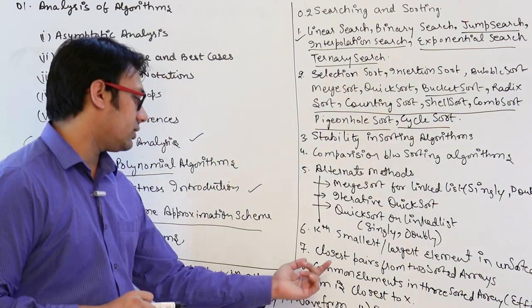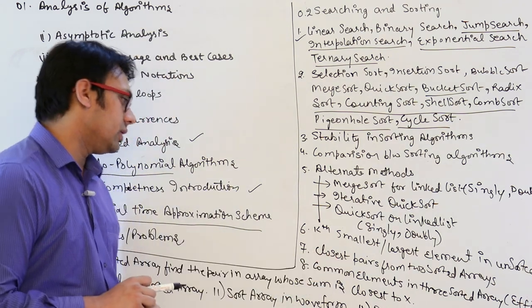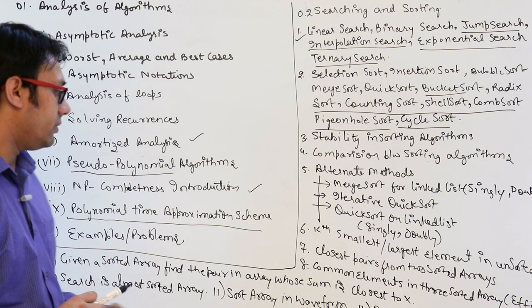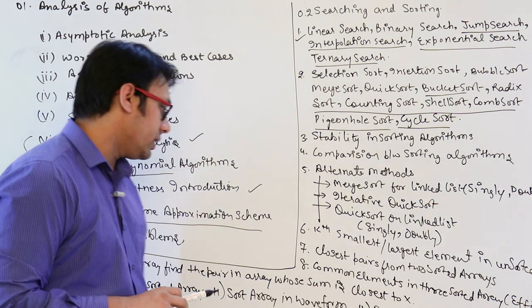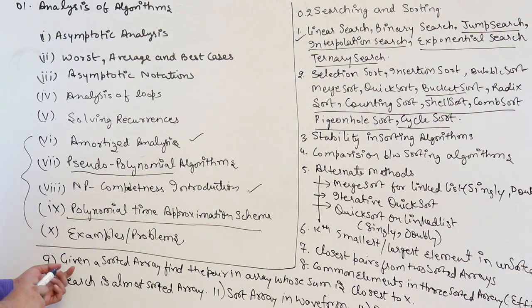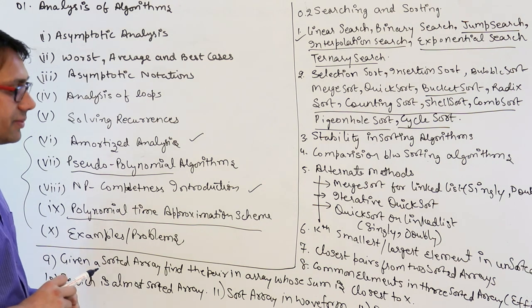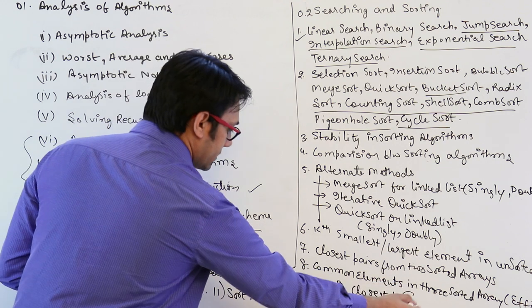Then we have the closest pair from two sorted arrays, common elements in three sorted arrays which should be efficient, and problems like: given a sorted array, find the pair whose sum is closest to x, some particular value.